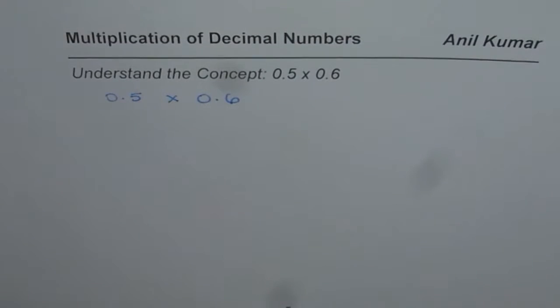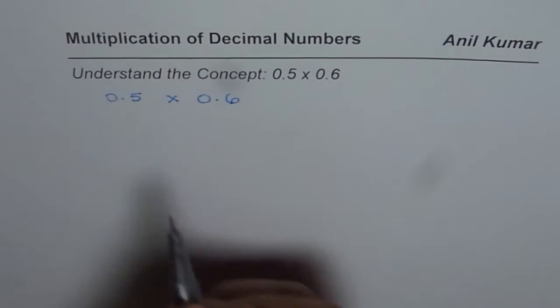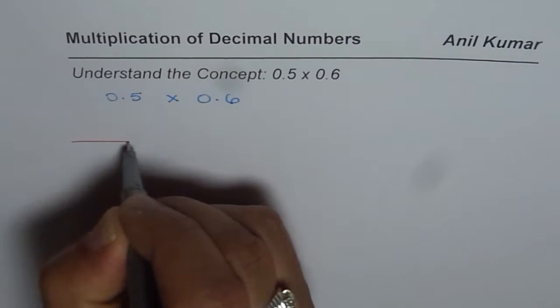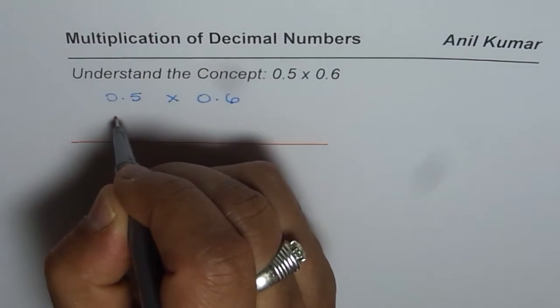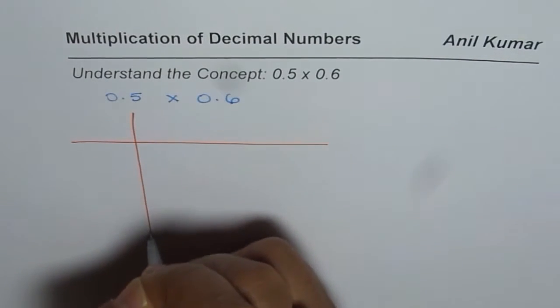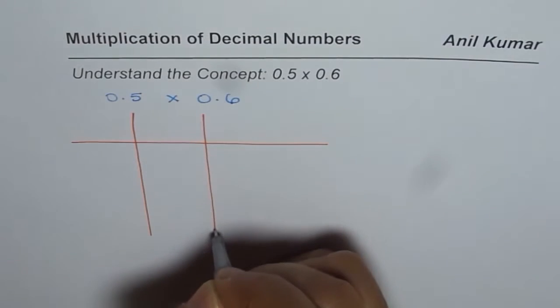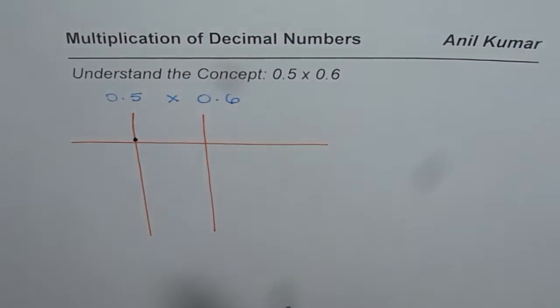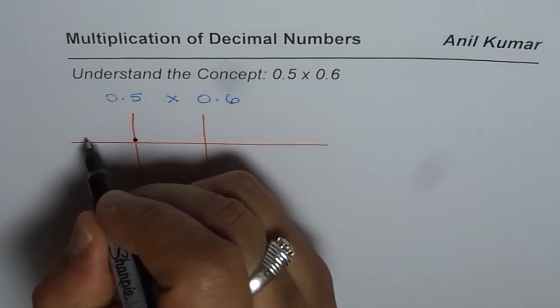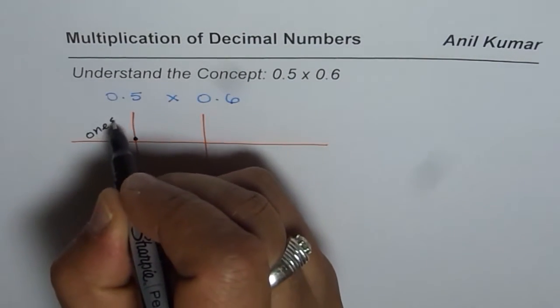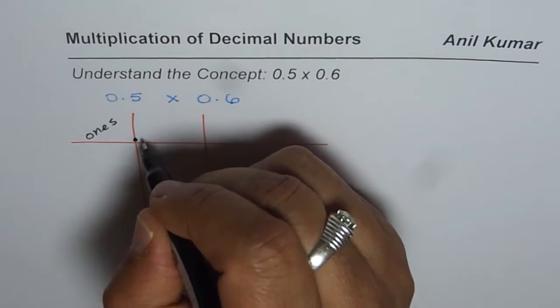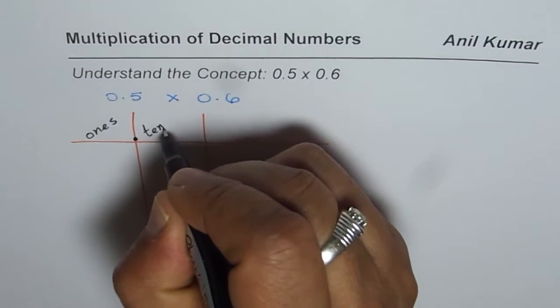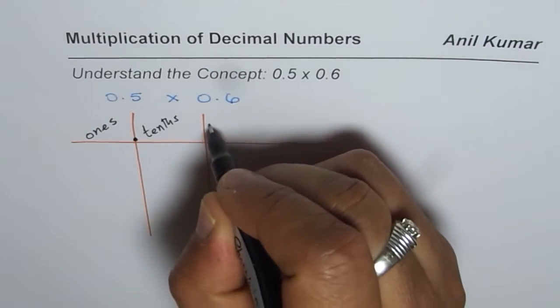What is 0.5? Let us first understand that. So we will begin from a place value chart. So I hope you remember in place value chart, if you put a decimal here, then the numbers on the left of decimal are ones. To the right we have tenths and hundredths.